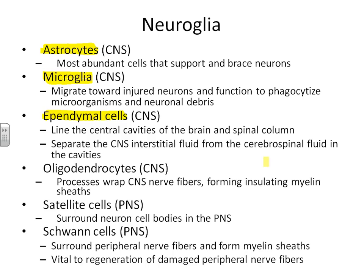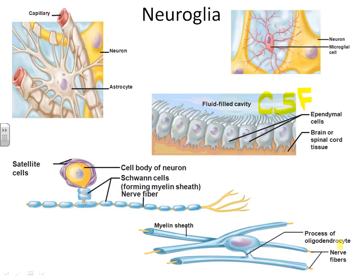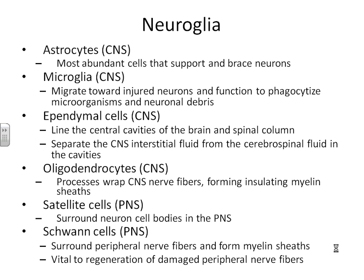The fourth type of neuroglial cell is called an oligodendrocyte. Oligodendrocytes wrap around all of your central nervous system cell fibers, forming a covering or coating that functions to insulate the nerves. The four types we've covered — astrocytes, microglial, ependymal, and oligodendrocytes — are only found in the central nervous system. The other two types, satellite cells and Schwann cells, are only found in the peripheral nervous system, and they function in exactly the same way as oligodendrocytes — wrapping around parts of the neuron to form insulation.